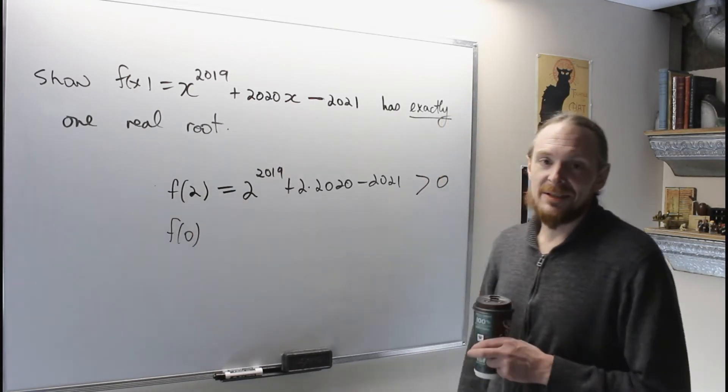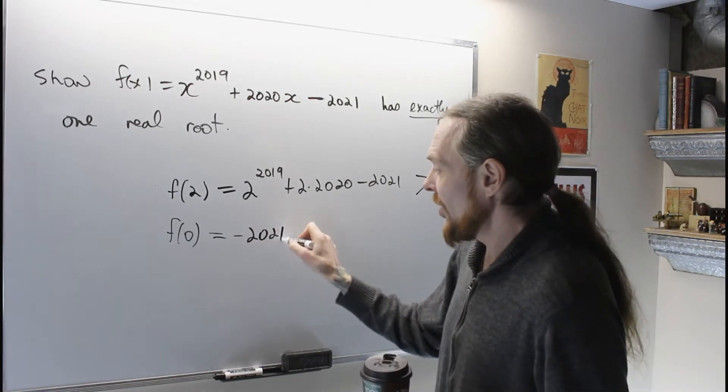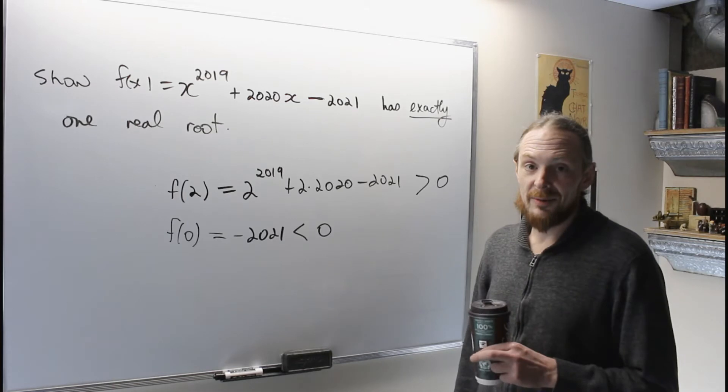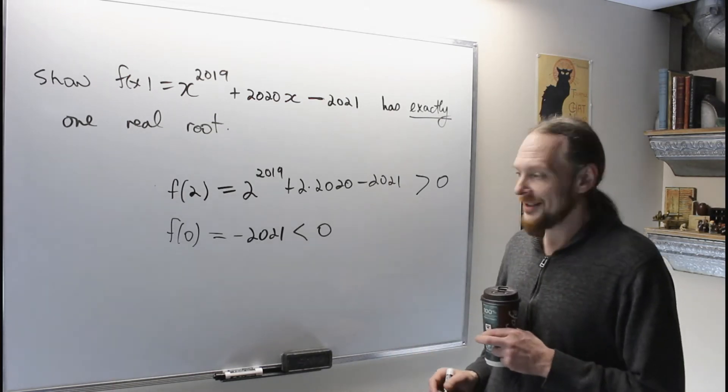f of 0 is equal to negative 2021, which is less than 0. So cleverly with this function you'll see in a second I almost stole the surprise,